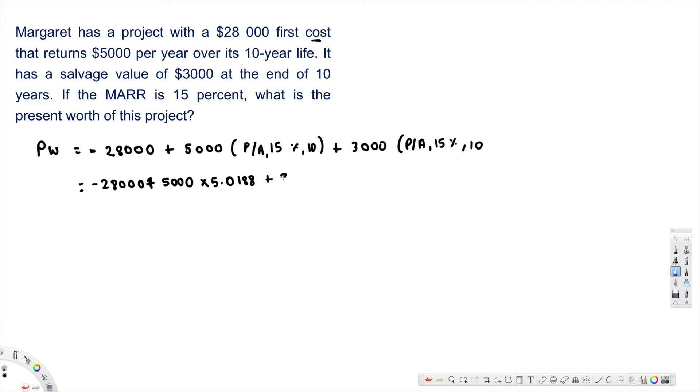Plus $3,000, and if you look at this value on the table, that is 0.24718. If you calculate this, it will become negative $2,164.46. This is the present worth, and that's how you do this kind of problem.